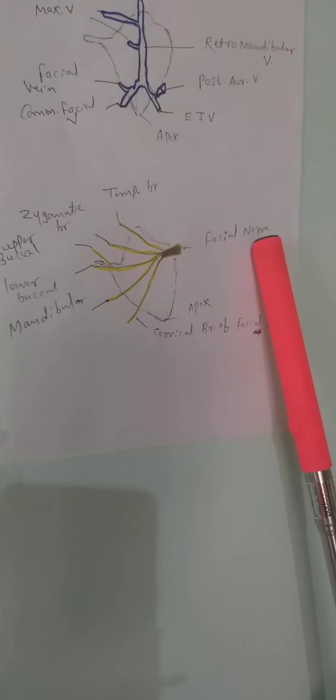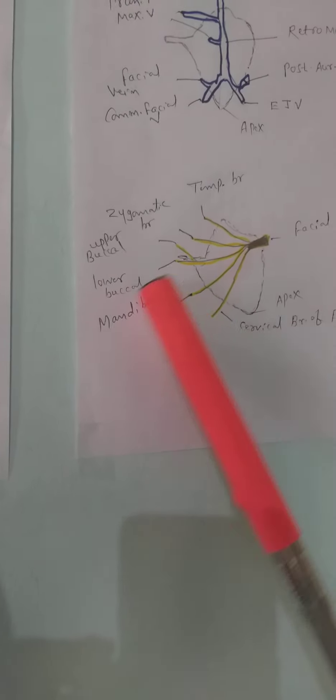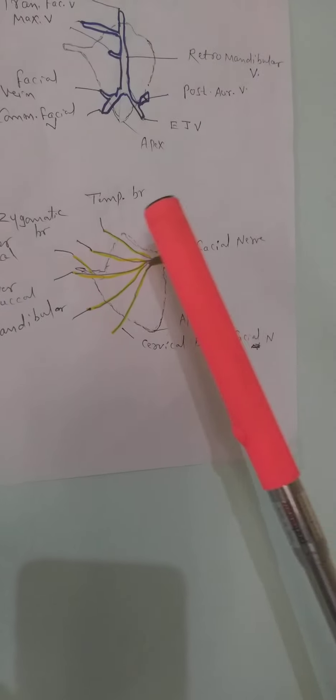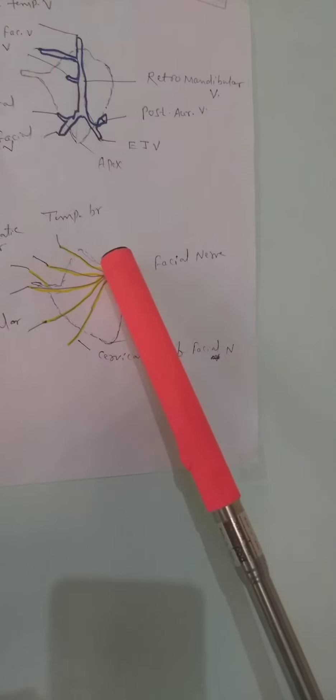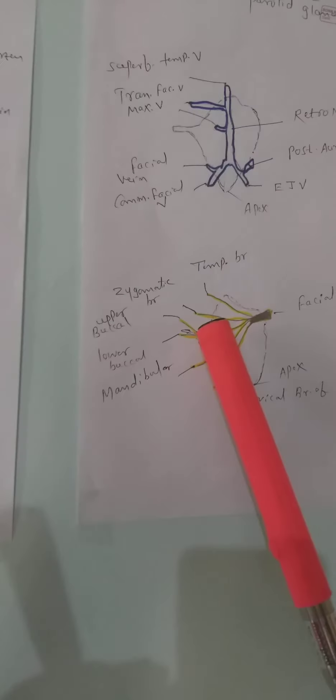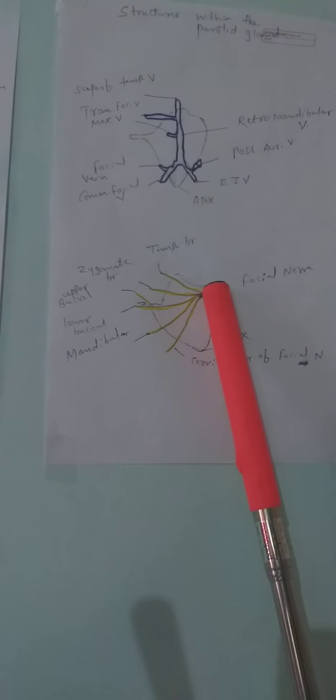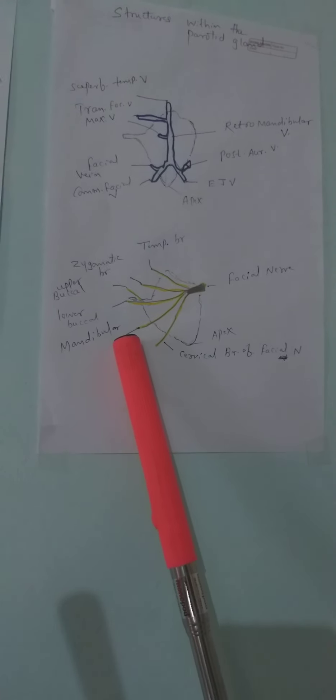The facial nerve, the seventh cranial nerve, enters posteromedially and gives branches here. The branches are: temporal branch, zygomatic branch, upper buccal, lower buccal, mandibular, and cervical - that is six branches in total. The temporal branch goes to the temporal area, zygomatic to the zygomatic area, upper buccal above the lip, lower buccal below the lip, mandibular to the mandibular area, and the cervical branch. The facial nerve enters posteromedially and comes out at the anterior border.